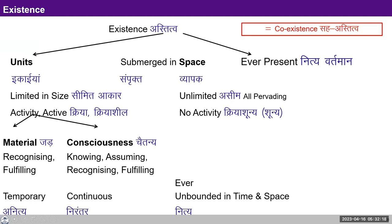The Units are also of two distinct types: Material Units and Consciousness Units. Material Units are temporary — they are formed and then deformed. This is a cyclic kind of process: formation happens, then deformation happens. An example of the material is the body. If we understand the body, we can also understand other Material Units.